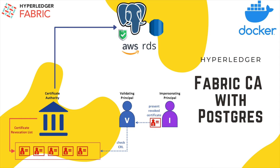Hey guys, welcome to this video. In this video we'll look at how we can use Postgres as our storage database for Fabric CA server. We already know that Fabric CA server provides integration with databases — the default is SQLite, but we can switch between MySQL and Postgres. We'll also see how enrolling or registering users stores entities into the database.